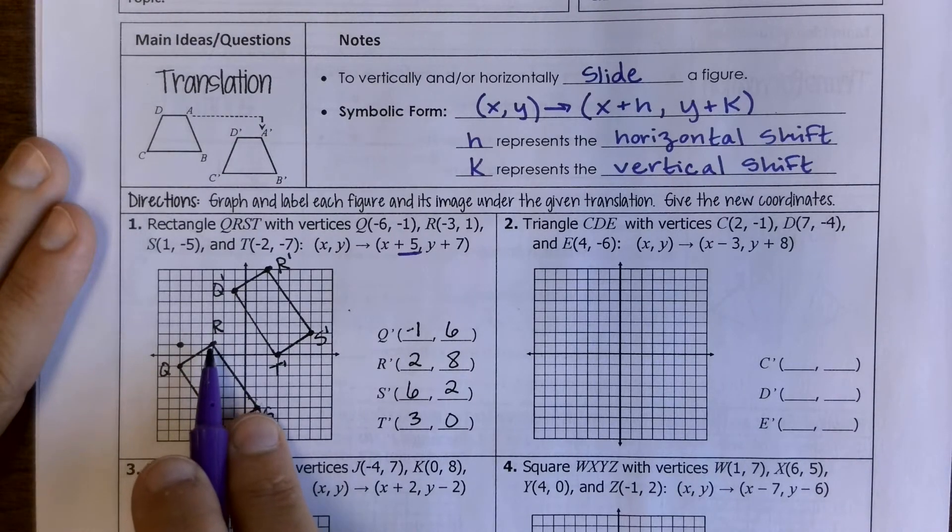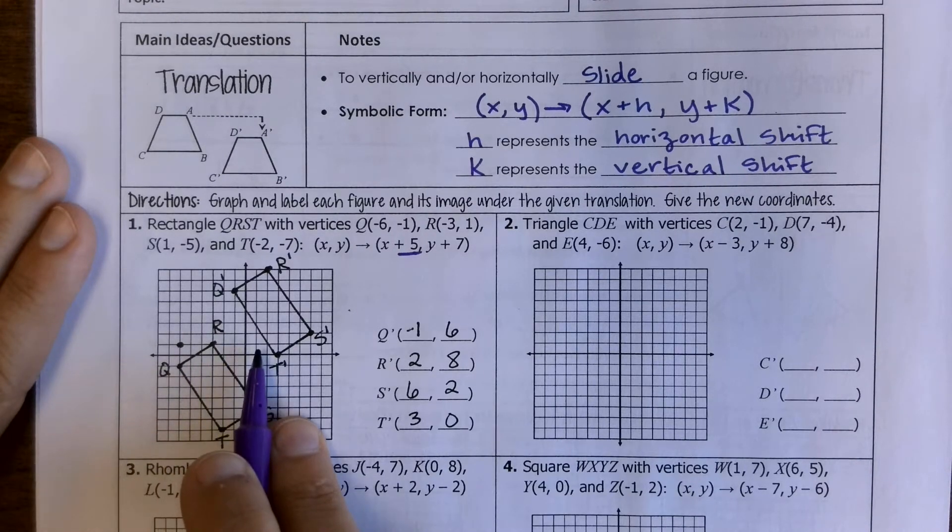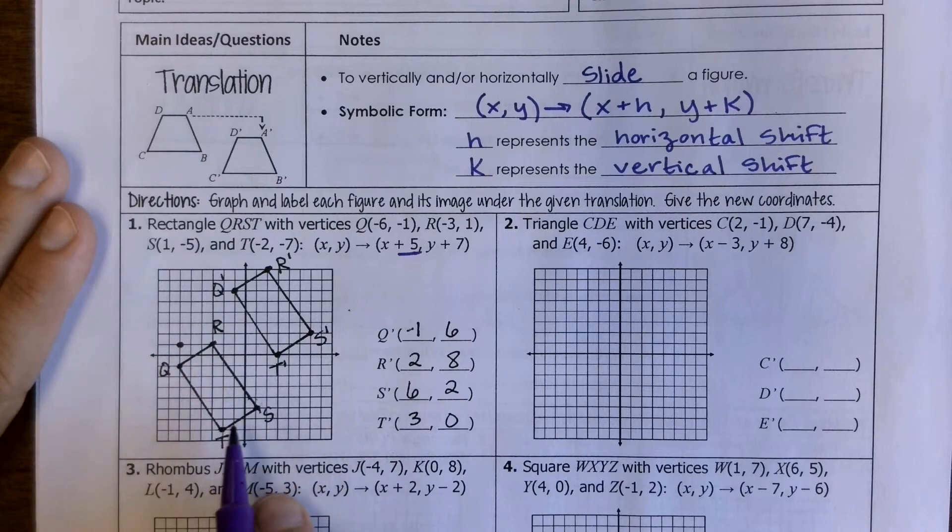The fact that with all of your x's we're adding 5, that's going to shift everything 5 to the right. So your r was right here and now it's going to end up being 5 to the right. Your q is 5 to the right, s is 5 to the right, t is 5 to the right.